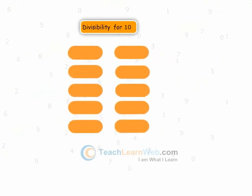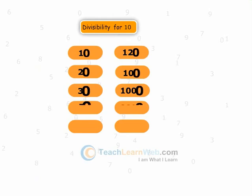All the above numbers are divisible by 10. Any number ending with the digit 0 is divisible by 10.